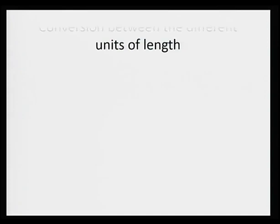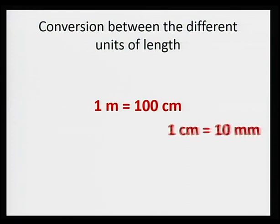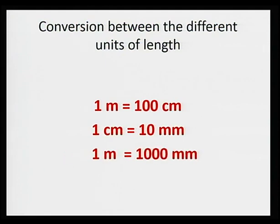Now let's have a look at how to convert between different units of length. In one meter we have 100 centimeters. In one centimeter we have 10 millimeters. In one meter we have 1,000 millimeters. And in one kilometer we have 1,000 meters. You need to remember these conversions. Let me help you find a way of remembering these conversion of units.